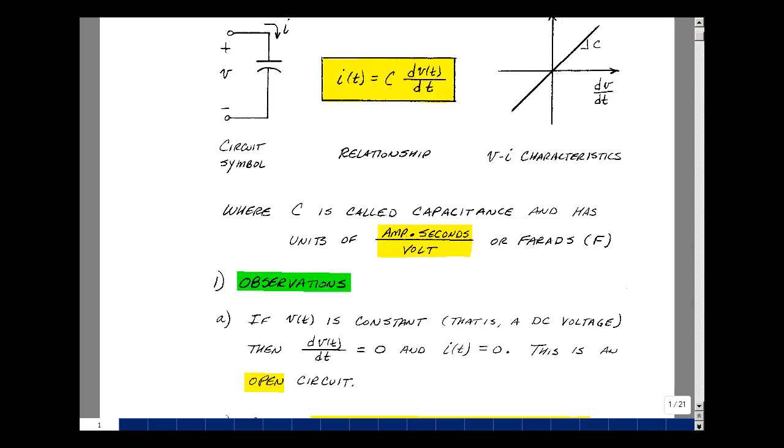Another observation is that if you have a change in voltage, or if you go from one level to another very abruptly, then you have an infinite slope as you make that transition. And that would imply that the current has to be infinite. Now, that's not possible. So we say that the voltage across a capacitance cannot change instantaneously.